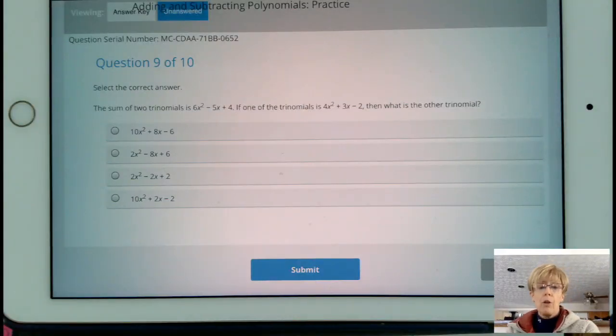The sum of two trinomials is 6x squared minus 5x plus 4. If one of the trinomials is 4x squared plus 3x minus 2, then what is the other trinomial?